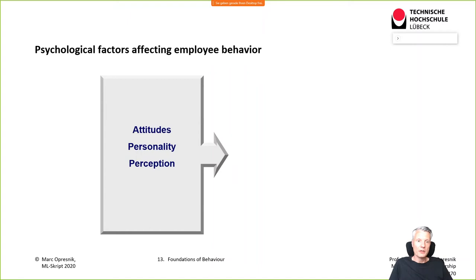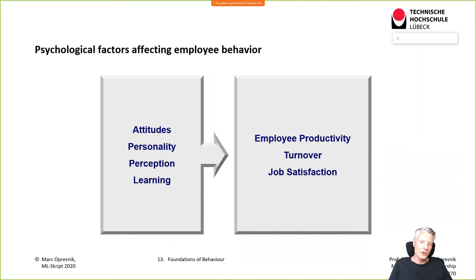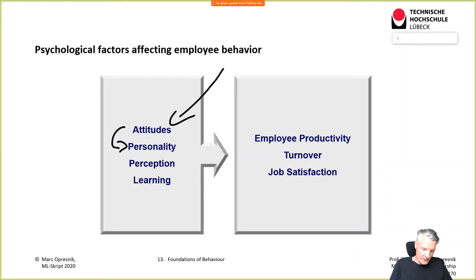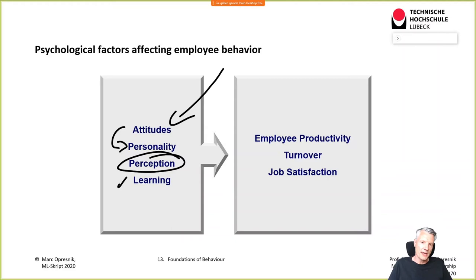What are the psychological factors that affect behavior — and in return, also productivity and turnover? First, it is people's attitudes toward their job and employer, which strongly depends on the personality type of the individual employee, and how the organization, team, department, or certain task is perceived. Also, how far people are willing to encounter learning curves and improve their performance has a very big impact on individual productivity and overall profitability.